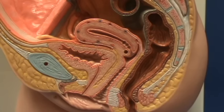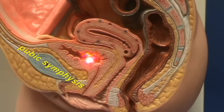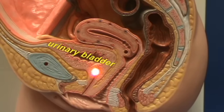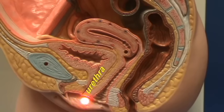We can see here the mons pubis, the pubic symphysis, the urinary bladder, and the urethra opening up into the vestibule.